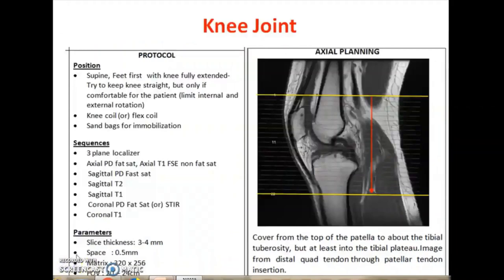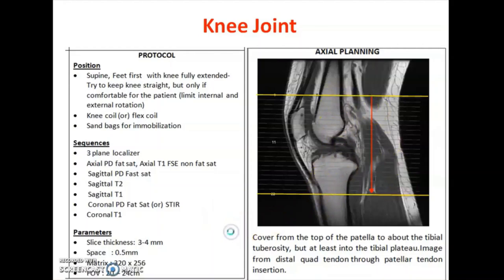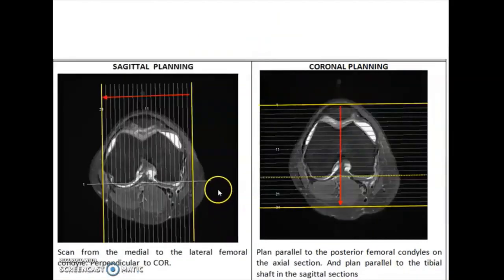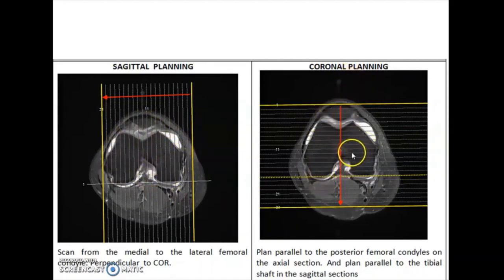A dedicated coil is used for knee joint imaging in the supine feet-first position. The protocol includes sagittal PD fat-sat, sagittal T2, sagittal T1, coronal PD fat-sat, and axial PD fat-sat. Plan the axial with the sagittal plane. Sagittal should be planned on the axial PD fat-sat. Coronal can be planned in the axial and correlated with sagittal imaging, and should be parallel to the tibial shaft in the sagittal sections.